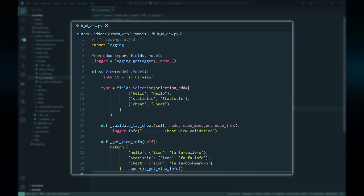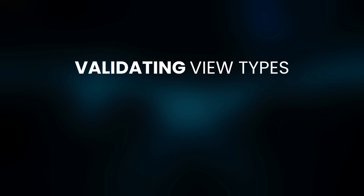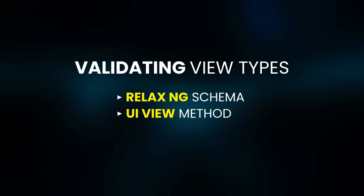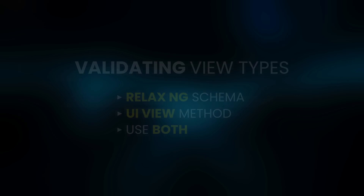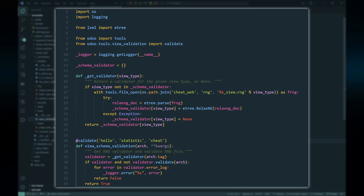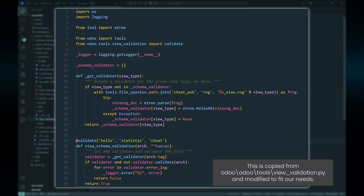The second thing is to validate the view type's arch field. There are three ways to validate the arch field value: first, by using a RELAX NG schema; second, by adding a validation method on the UI view model; or third, using both — which is what the built-in Odoo view types do. For our view types we use RELAX NG schemas. To do this we need to create a function to perform the validation and register it with the validate decorator from the module view validation.